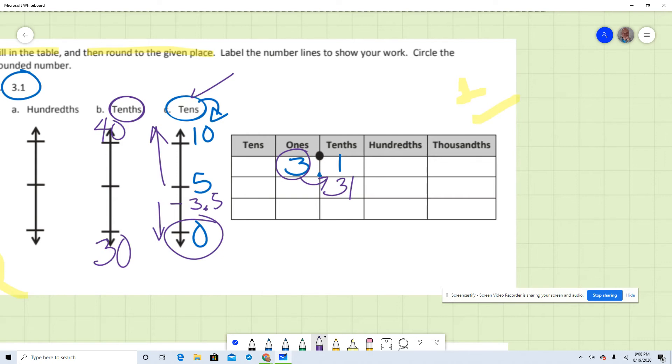Now, where is 31? 31, let me use a different color. 31 should be in here. And now where is the midpoint? Your midpoint should be 35 right here.